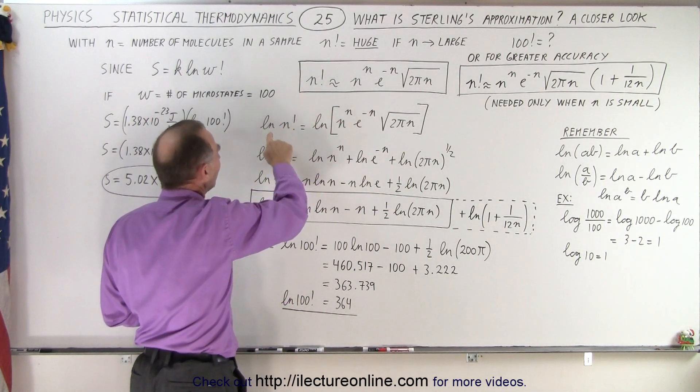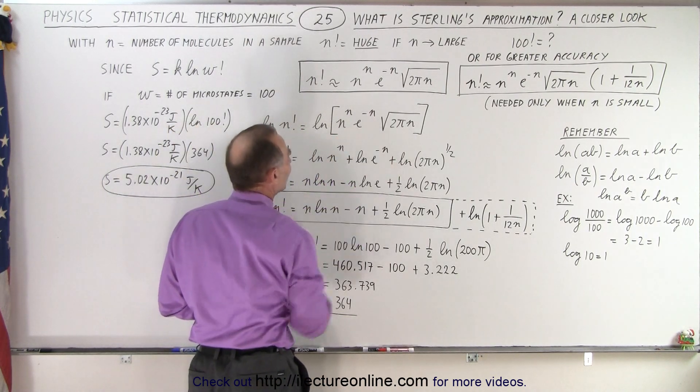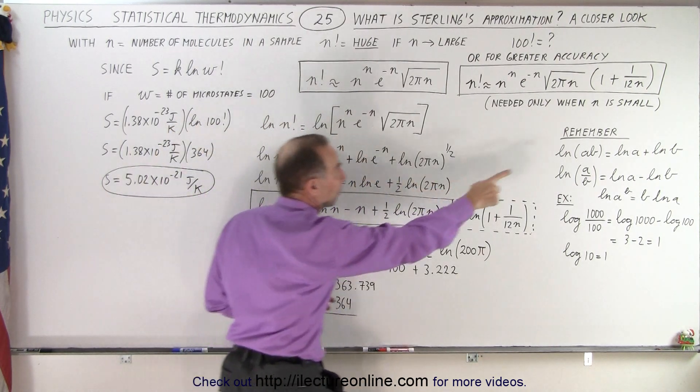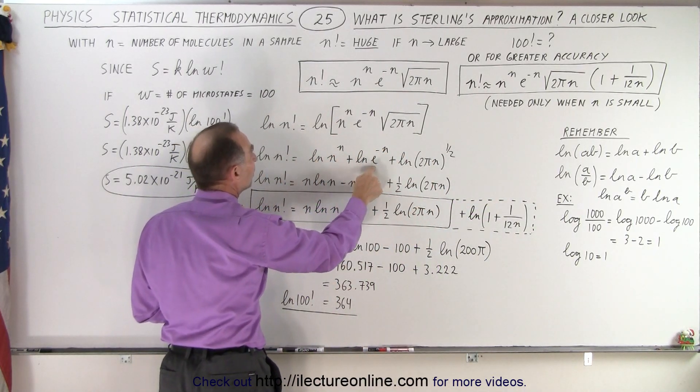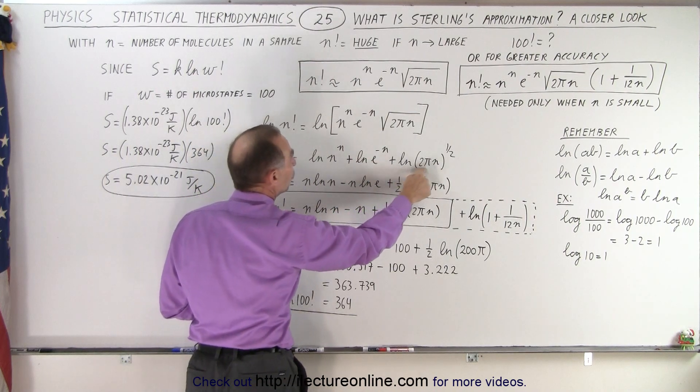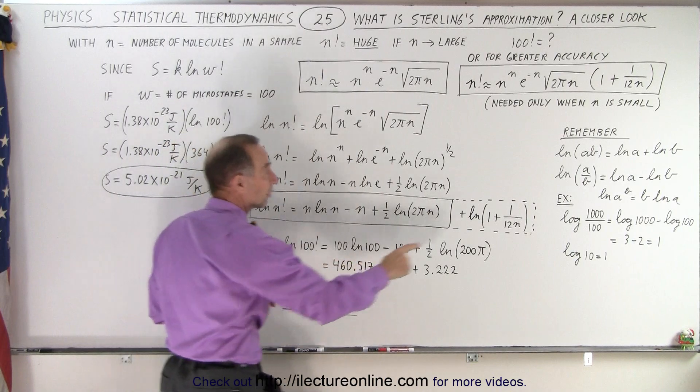We're going to take the natural log of both sides so we have the natural log of n factorial equals the natural log of the product of these three factors, and just as we saw before we can then separate them as the natural log of n to the n plus the natural log of e to the minus n plus the natural log of 2 pi n to the one half power.